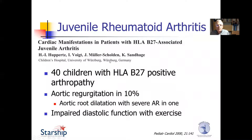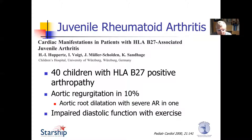What about JRA? There's very little written about the cardiac manifestations of JRA in children. A report from Germany of 40 children with HLA-B27 positive arthropathy found 10% had aortic regurgitation, and in one of them the AR was severe. As with adults, they found impaired diastolic function, although only with exercise.